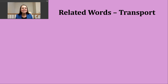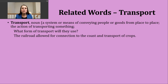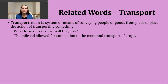Let's look at some words related to our verb transport. The first is just the noun form — same spelling, same pronunciation. When I use the noun 'transport,' I might be referring to a system or means of carrying people or goods from place to place. For example: 'What form of transport will they use?' — wondering if it's a vehicle, an aircraft, or a ship. A second way the noun is used is to refer to the action of transporting something, as in: 'The railroad allowed for connection to the coast and transport of crops.'